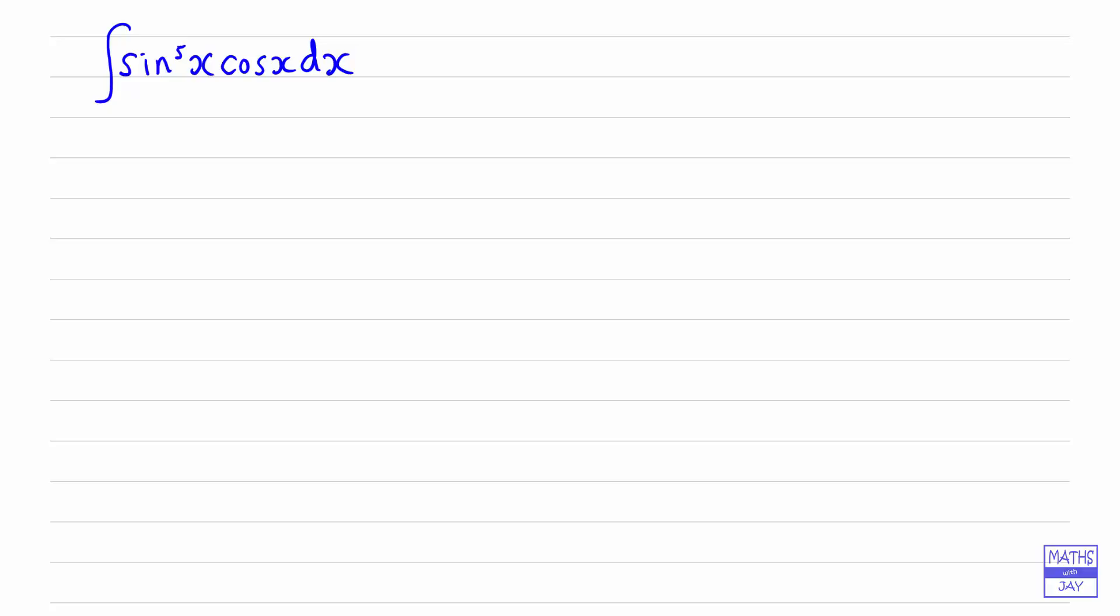Let's first rewrite the integral to make it really clear what we've got here. So sin⁵x is really (sin x)⁵. Very often when we're doing this kind of integration, the thing that u is going to equal is the thing that's in brackets.